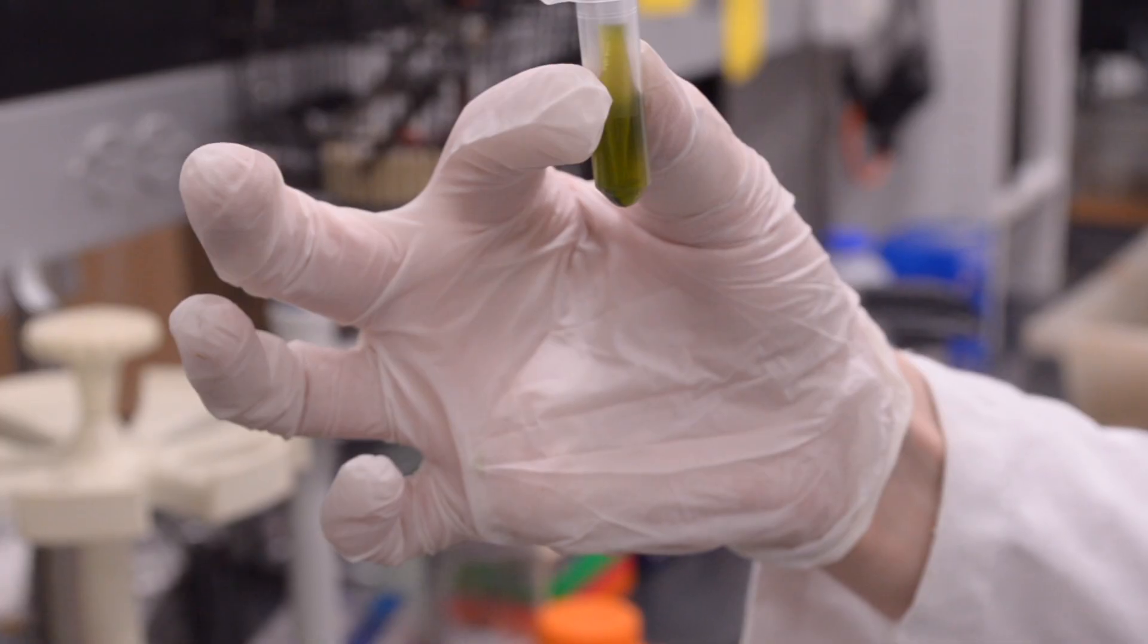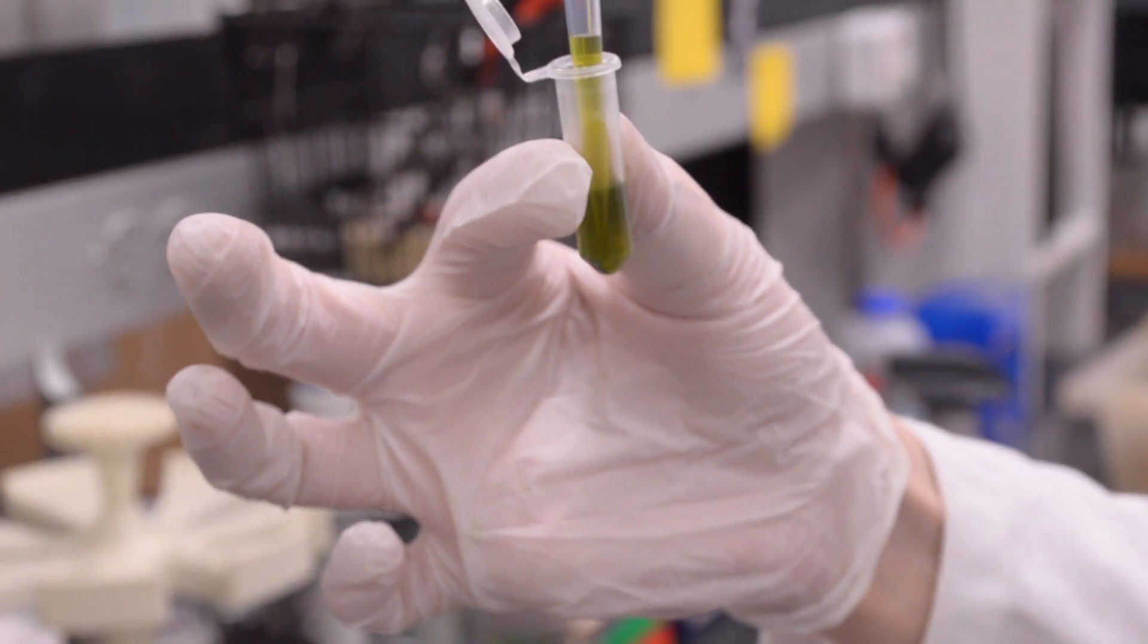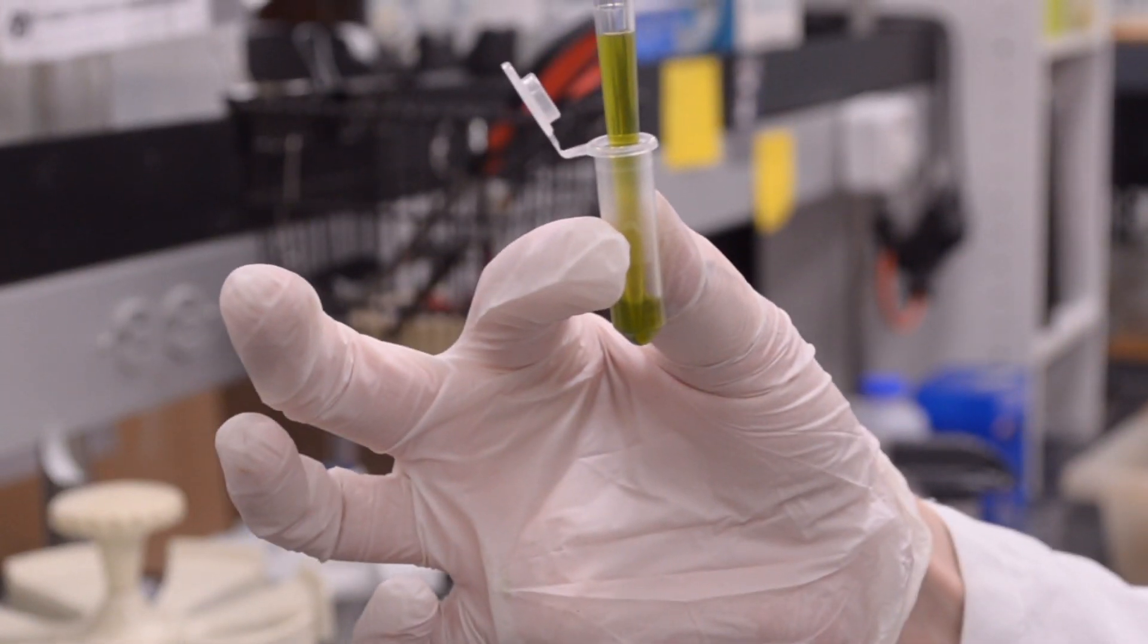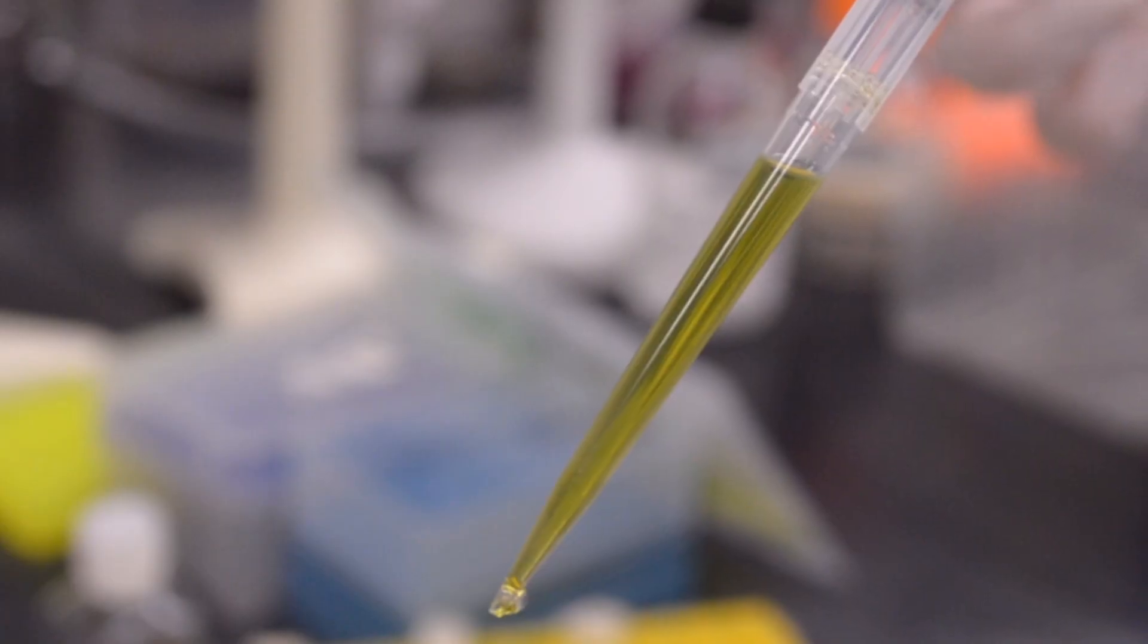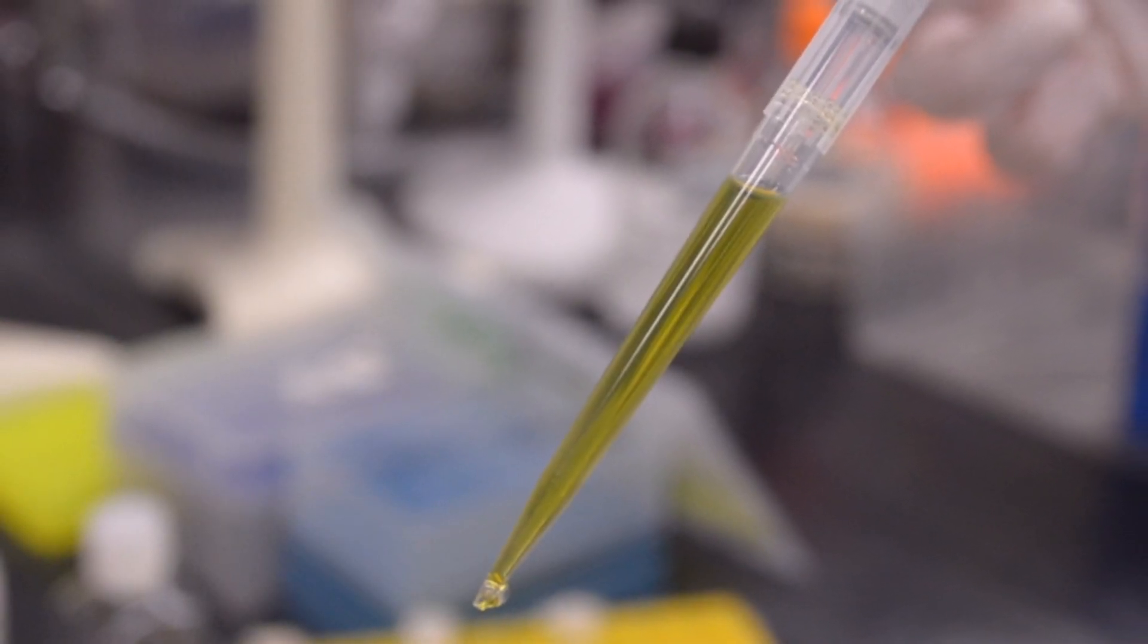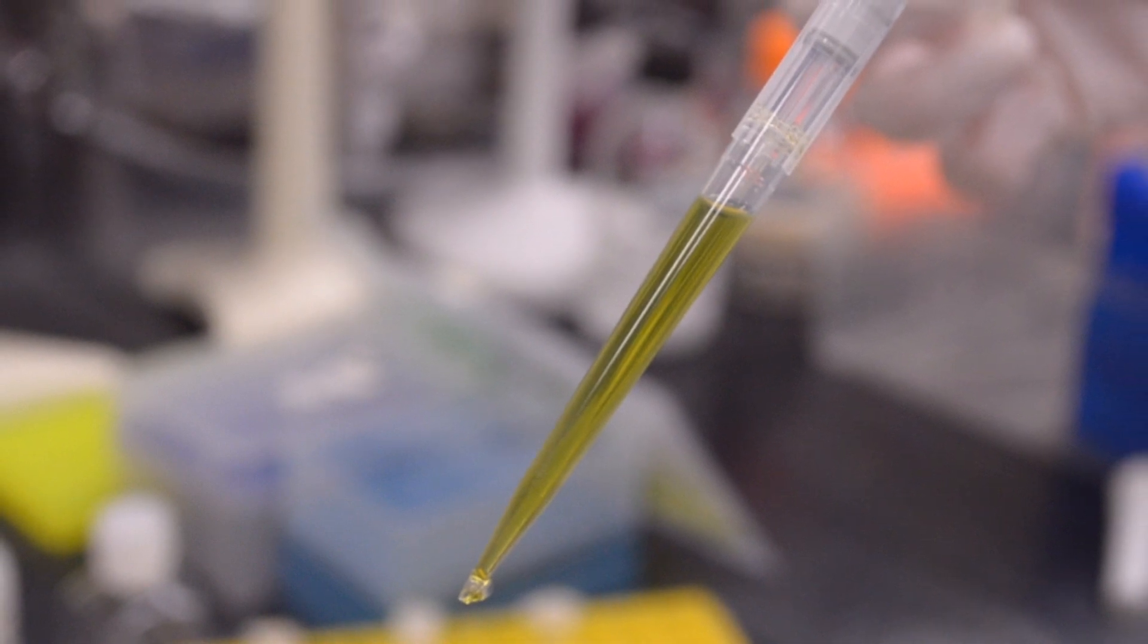Pipette out the liquid, but be careful not to get too close to the solids at the bottom. Your pipette should still be set at 1,000 microliters. Lower the volume of the pipette until the liquid has reached the tip. Now you know how much liquid you actually have.